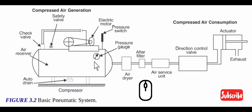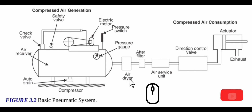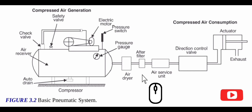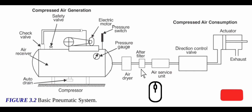9. Air dryer: A device for reducing the moisture content of the working compressed air. 10. After filter: A filter that follows the compressed air dryer and is usually used for the protection of downstream equipment from desiccant dust etc. is called an after filter. The term filter refers to a device whose primary function is the removal of insoluble contaminants from a liquid or a gas with the help of porous media.